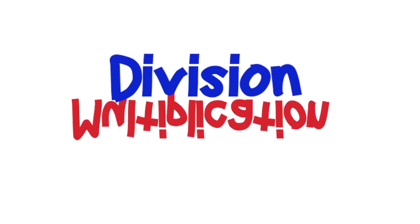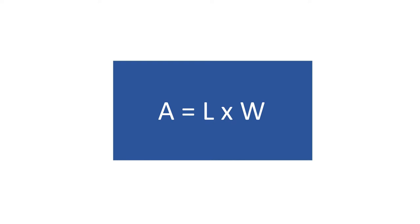Multiplication and division are inverse operations. That is, one operation can be used to undo the other. Because they are related, we can use an area model to solve division as well. When we find the area of a rectangle, we multiply the length times the width to get the area.